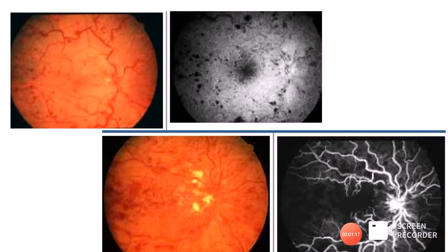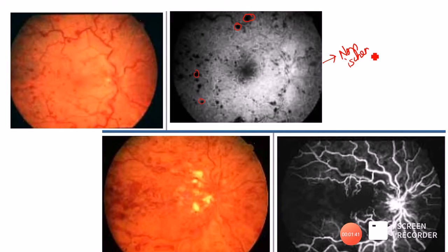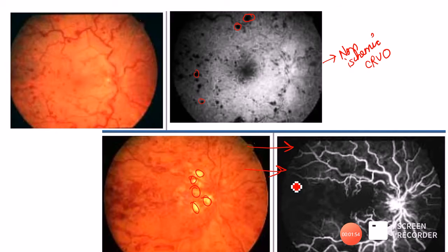This picture shows two patients with CRVO. In the first patient, we see dot-blot hemorrhages causing blocked fluorescence, but no capillary non-perfusion areas — indicating non-ischemic CRVO. The second patient has many cotton wool spots suggesting ischemic CRVO, and on FFA we see extensive capillary non-perfusion areas with almost the entire fundus appearing black, confirming ischemic CRVO.